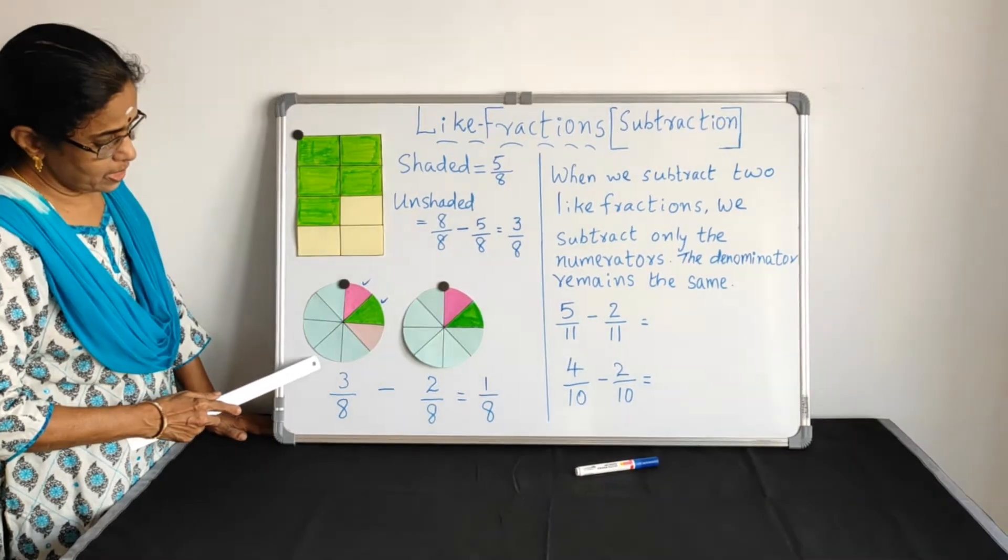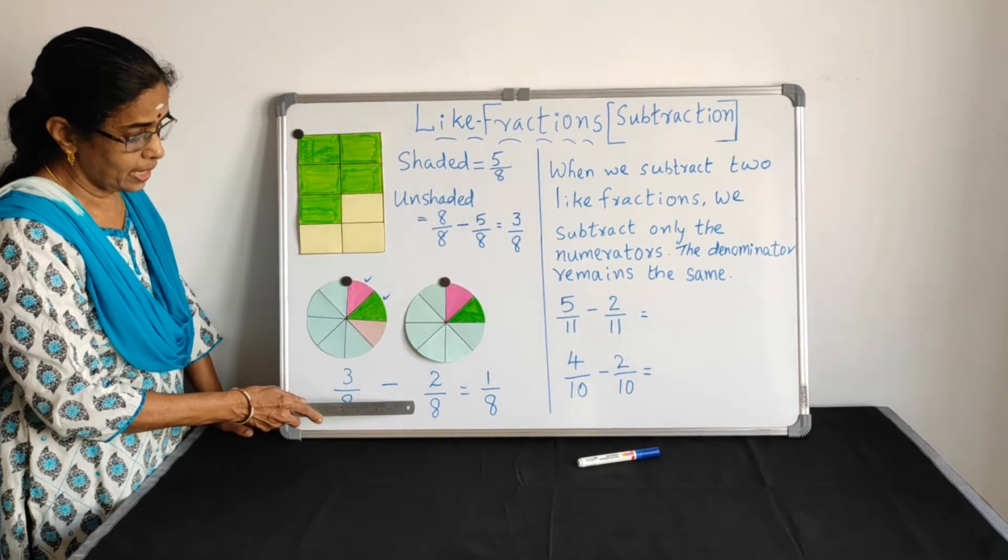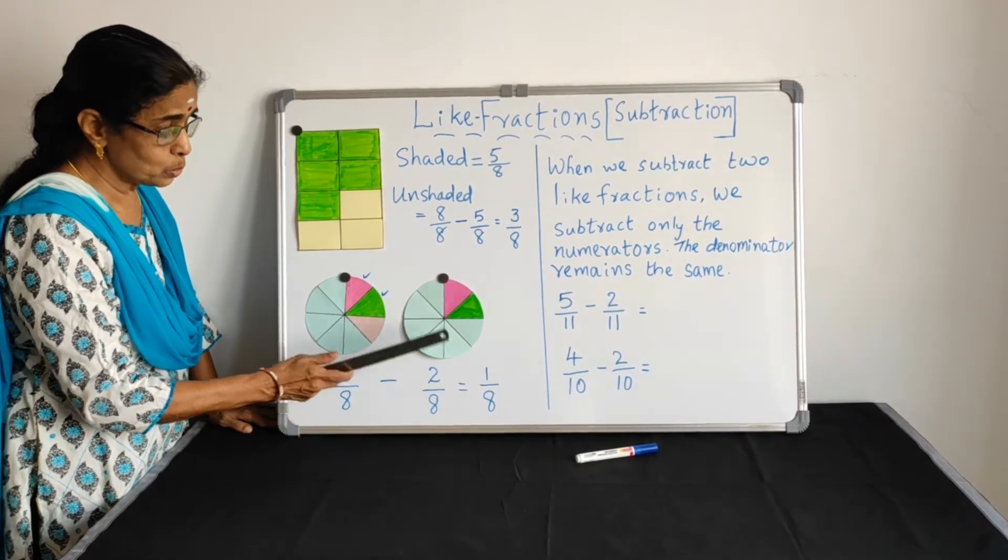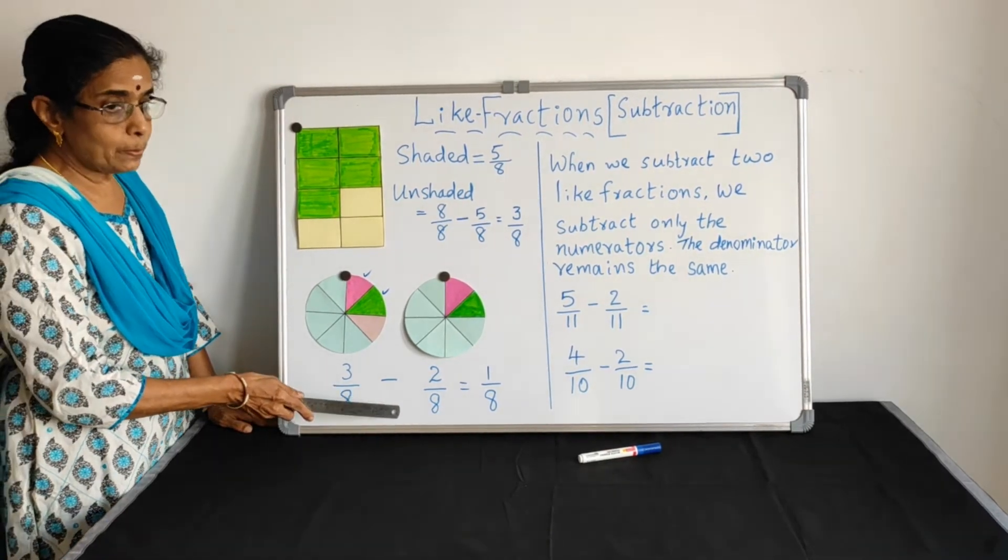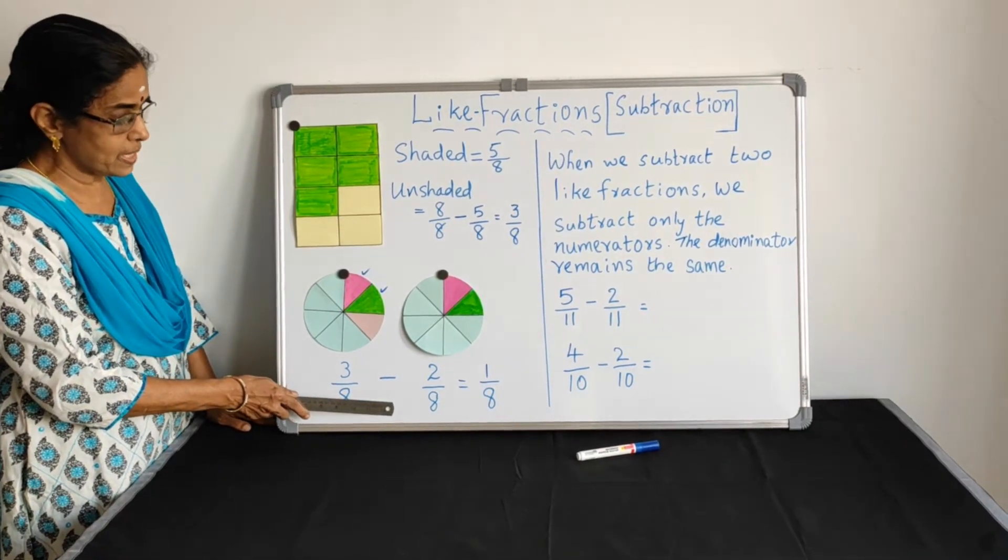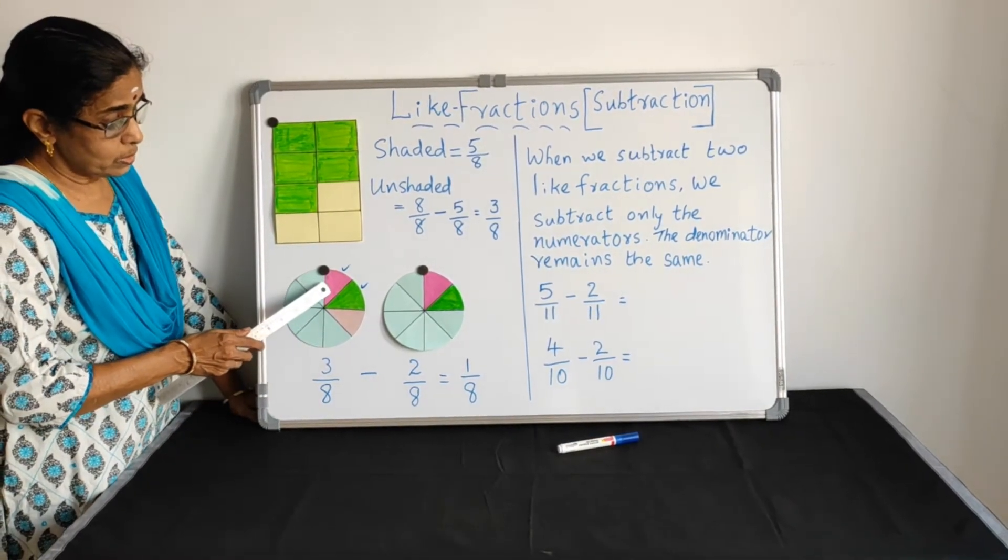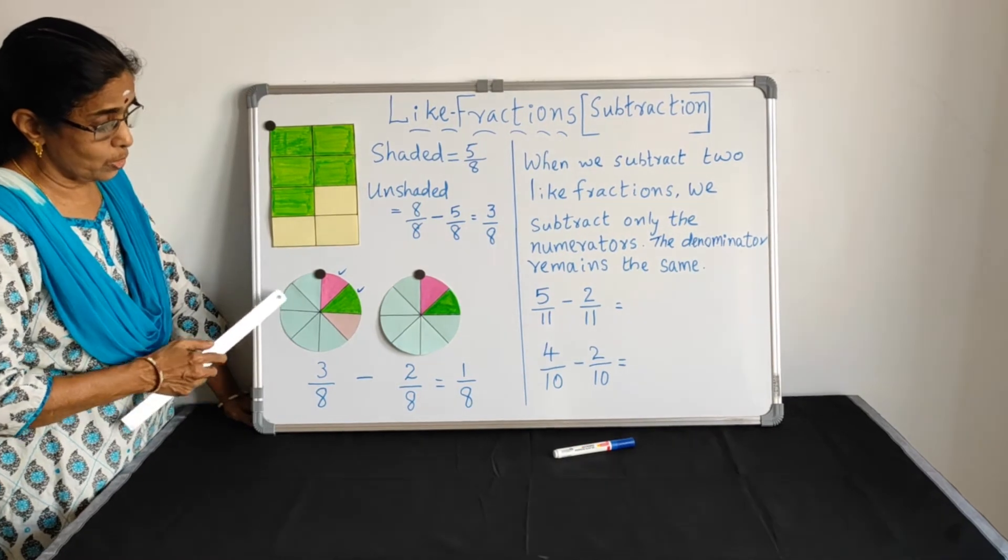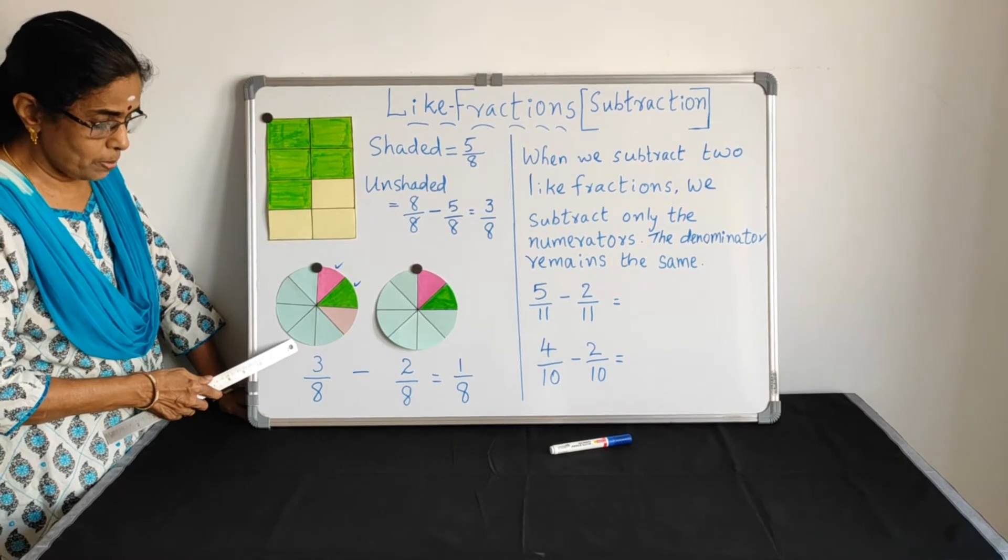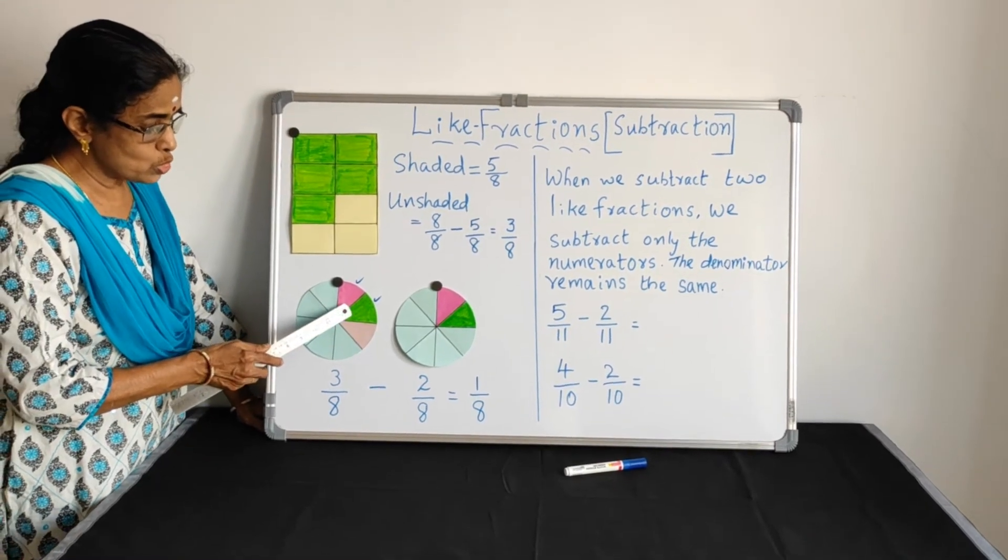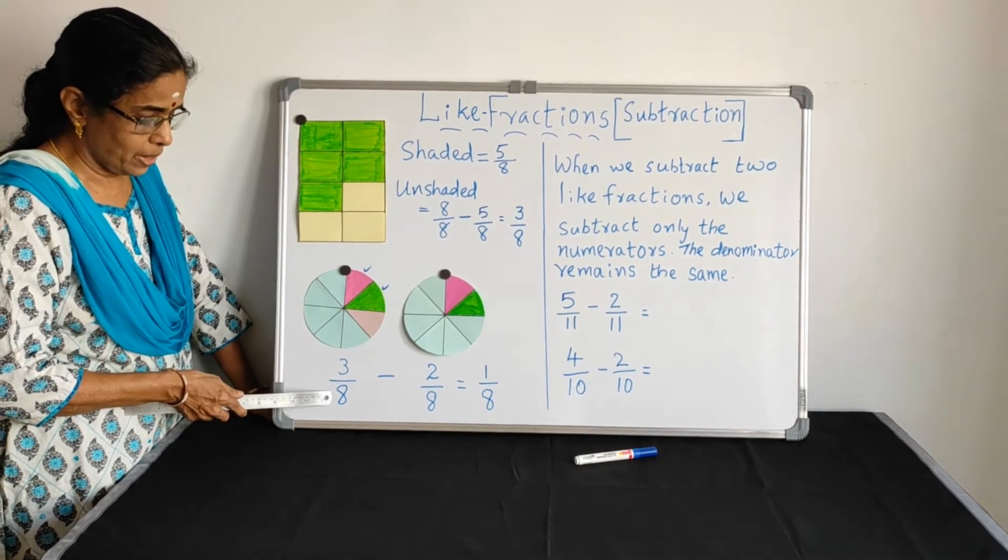Now, here comes 3 by 8 minus 2 by 8. We are going to connect with the story. Story time helps you to understand the concepts clear. Binu's mom gave 3 portions of a big cake. It is divided into 8 equal parts. And mom gave 1, 2, 3. 3 pieces. So it represents 3 by 8.